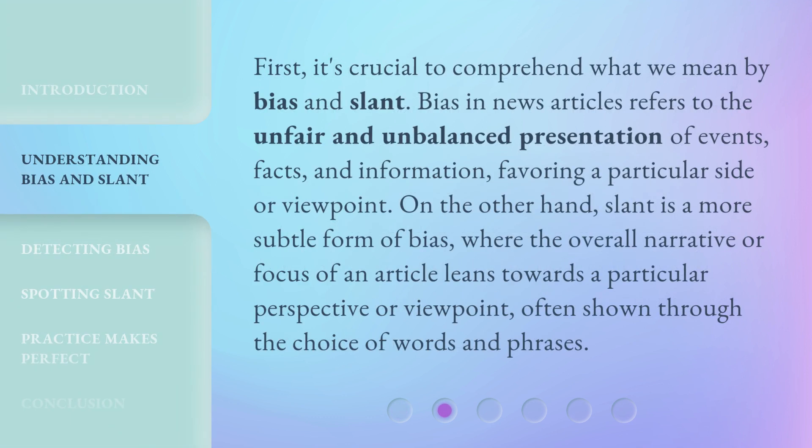First, it's crucial to comprehend what we mean by bias and slant. Bias in news articles refers to the unfair and unbalanced presentation of events, facts, and information, favoring a particular side or viewpoint. On the other hand, slant is a more subtle form of bias, where the overall narrative or focus of an article leans towards a particular perspective or viewpoint, often shown through the choice of words and phrases.